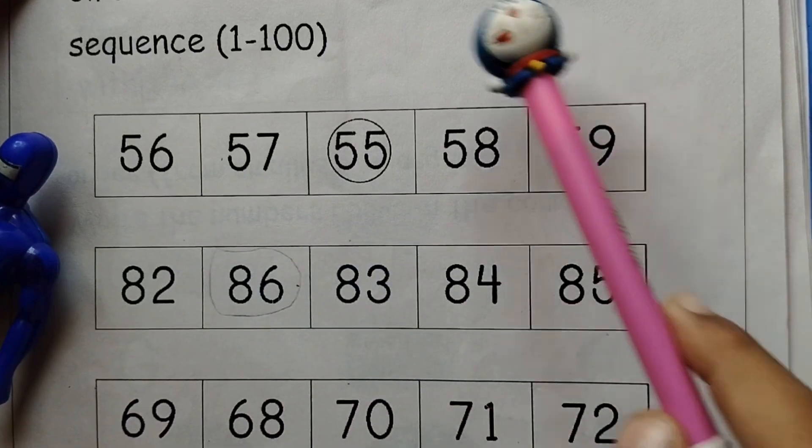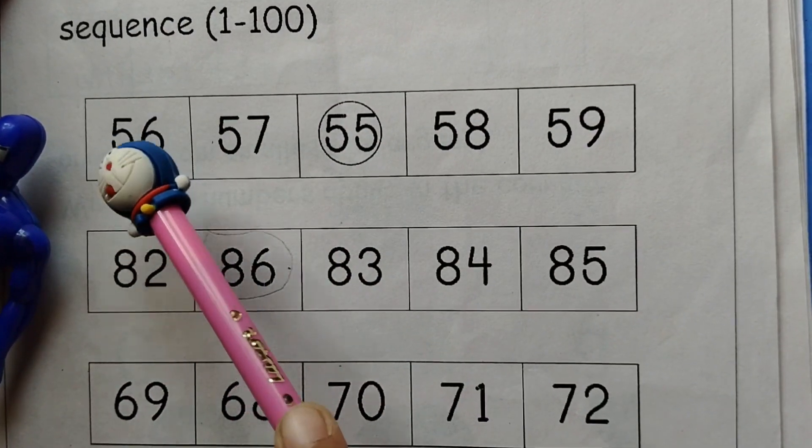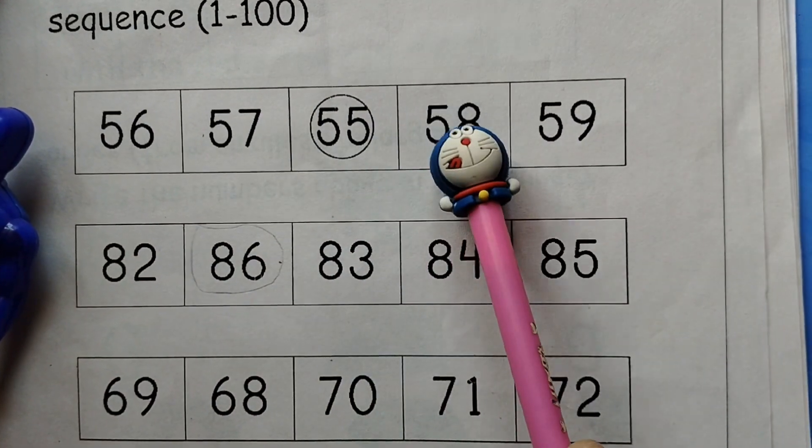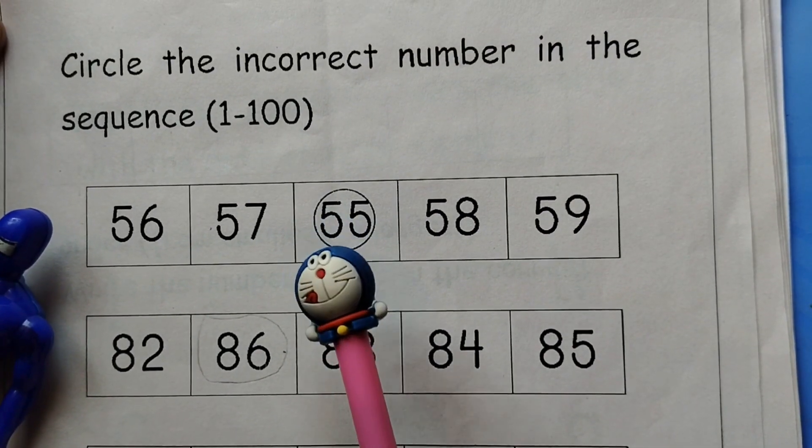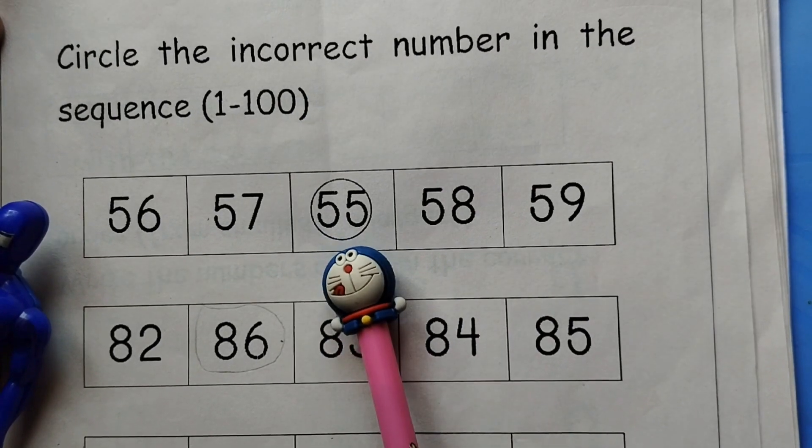This is example 56, 57, 58, 59. 55 is the incorrect number in the sequence.